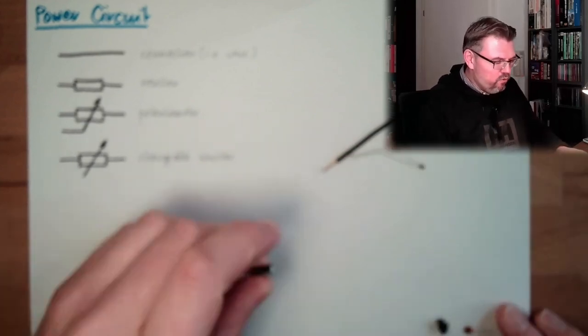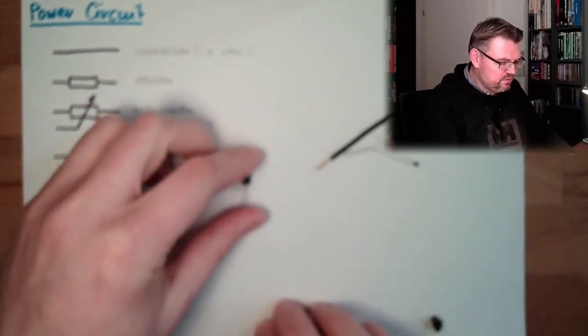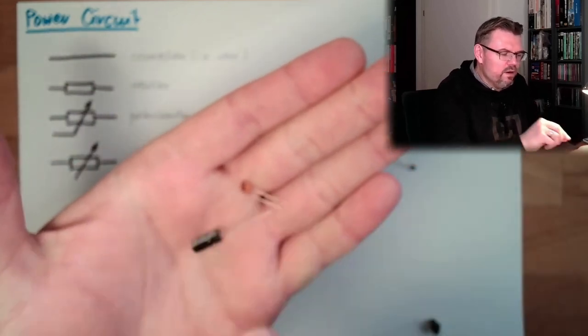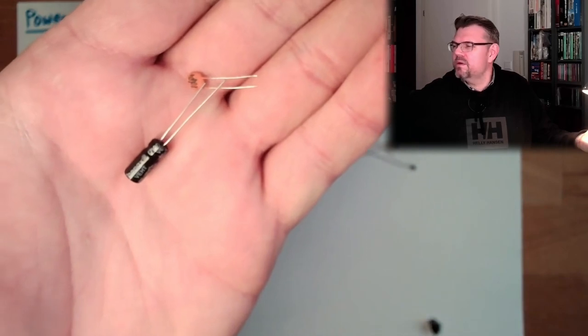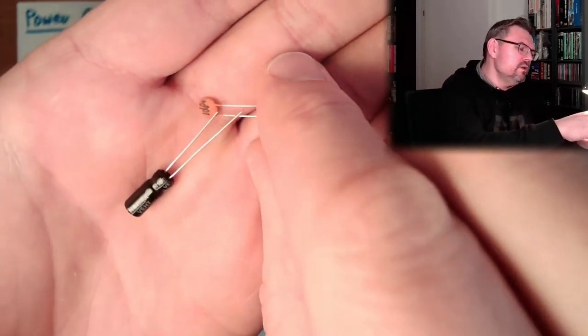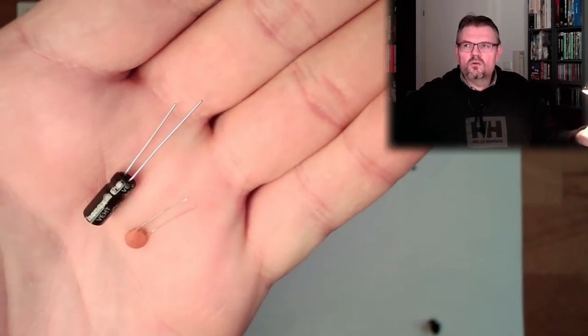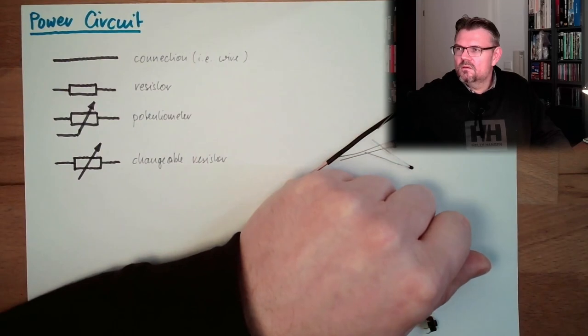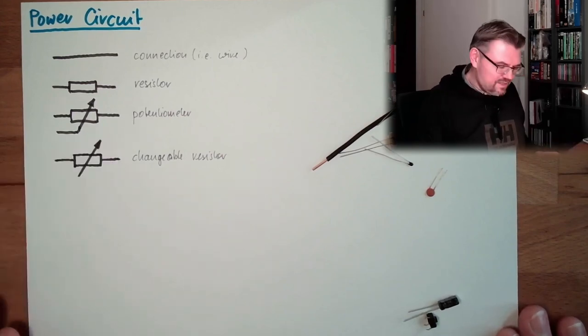And here I also have other stuff. These are capacitors, for instance. We will talk about capacitors. The big one is an electrolytic capacitor, and the small one is a ceramic capacitor. So this is how those are looking. They also have their own symbols.